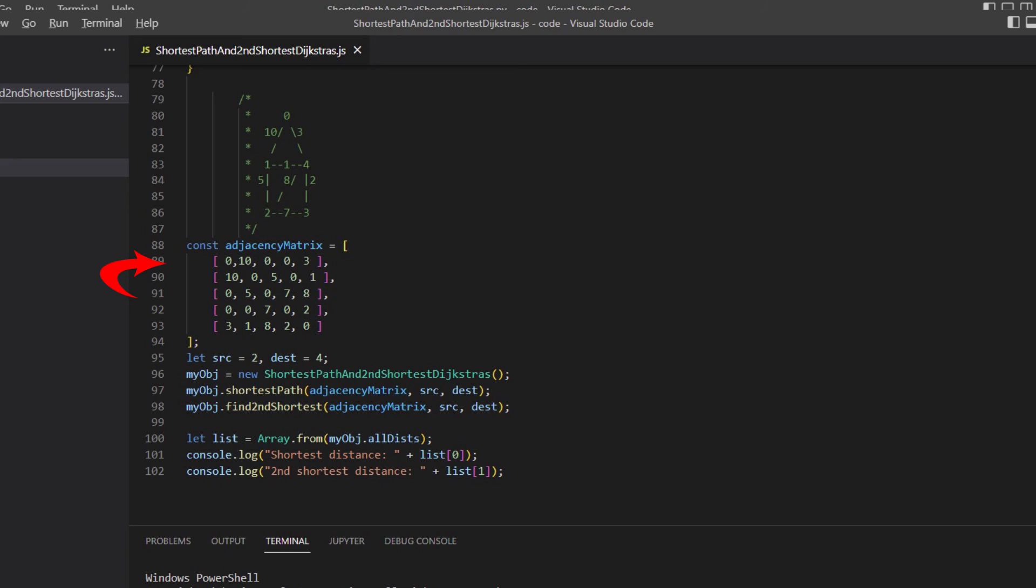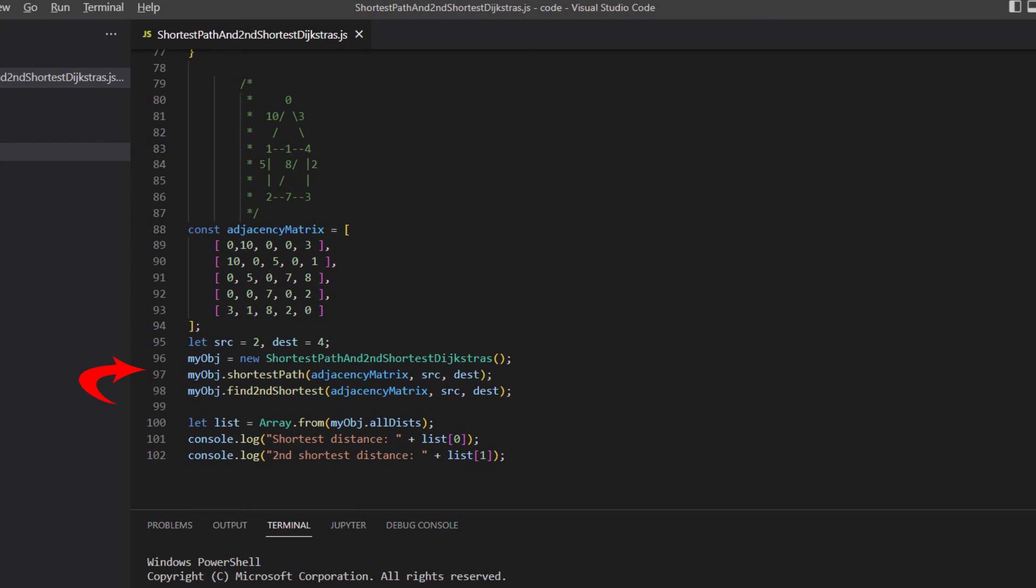In the main function, we define an adjacency matrix, the source and the destination. Then call shortest path and find second shortest. Now we print the result.